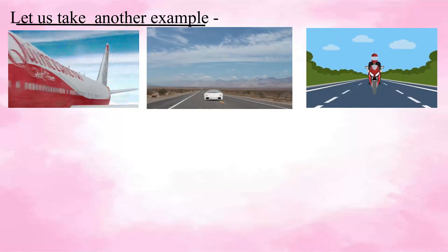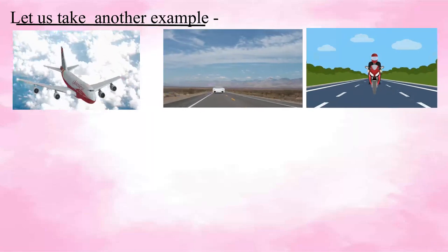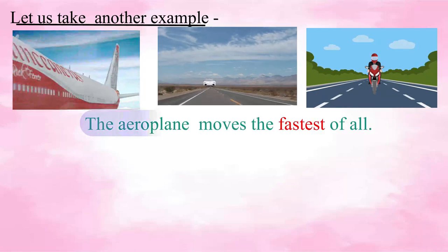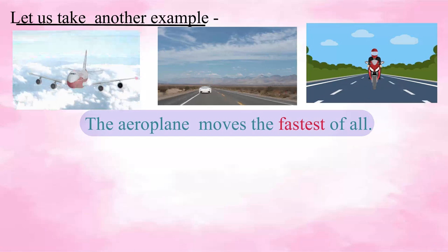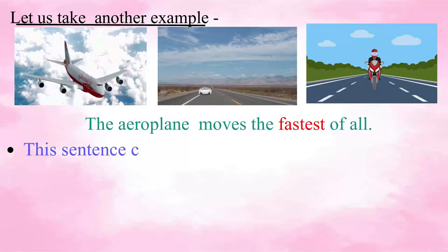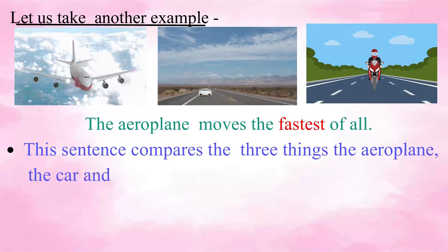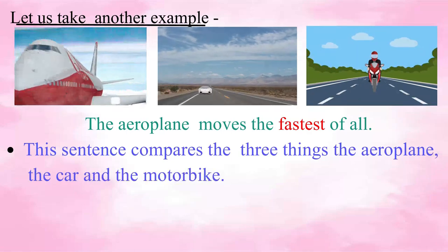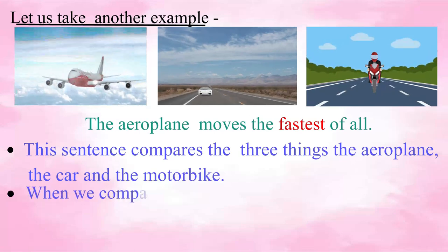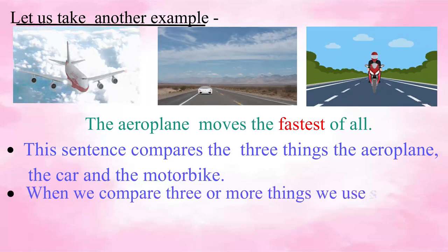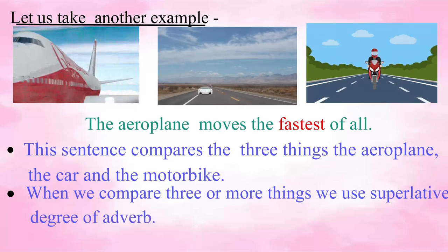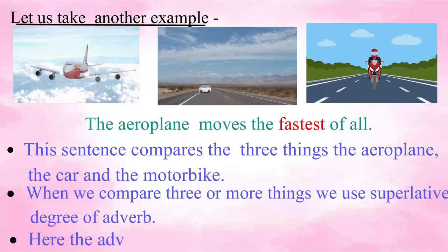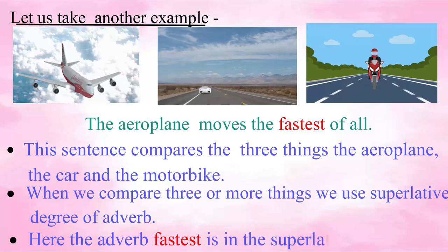Here are three objects — an aeroplane, a car, and a motorbike — and they all are in moving position. The aeroplane moves the fastest of all. This sentence compares the speed of more than two objects. When we compare three or more things, we use the superlative degree of the adverb. Here, the adverb 'fastest' is in the superlative form.